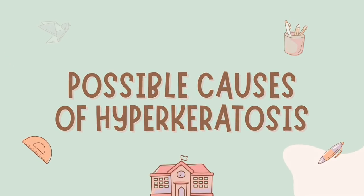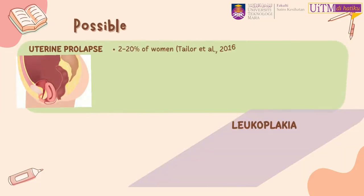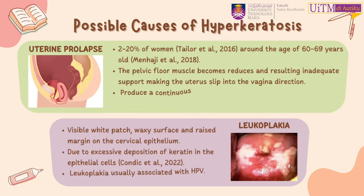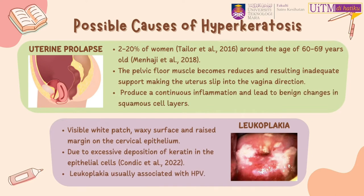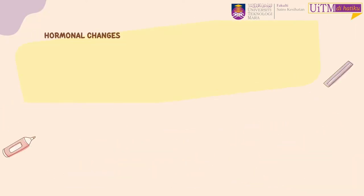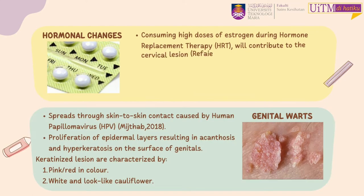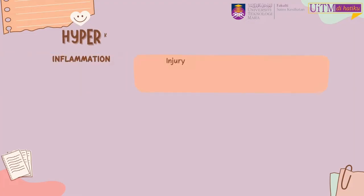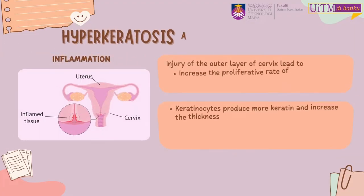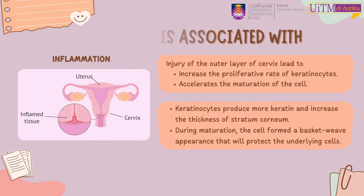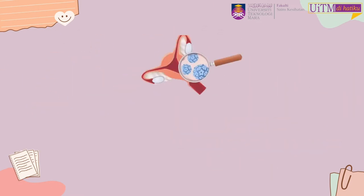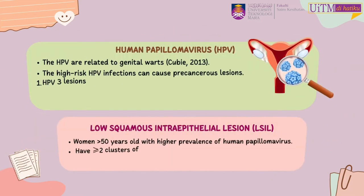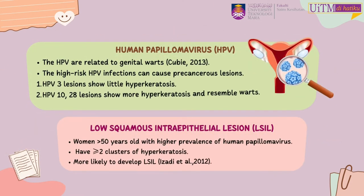The possible causes of hyperkeratosis are uterine prolapse, leukoplakia, hormonal changes, and genital warts. Hyperkeratosis can be associated with inflammation, and it can also be associated with human papillomavirus and low-grade squamous intraepithelial lesion.